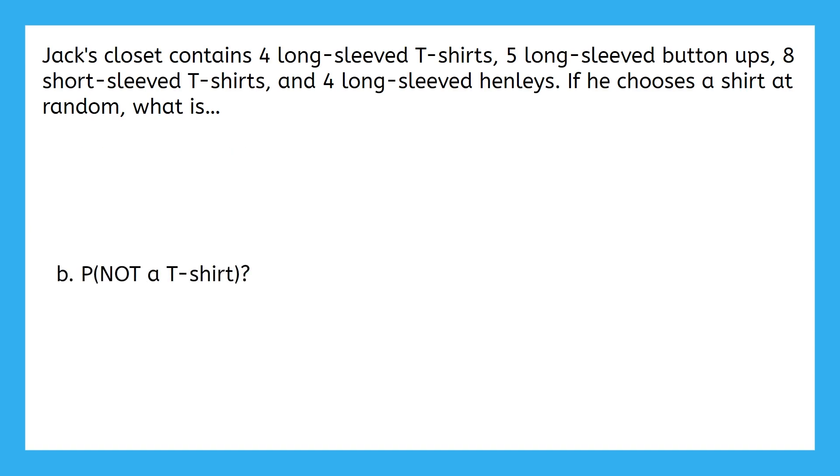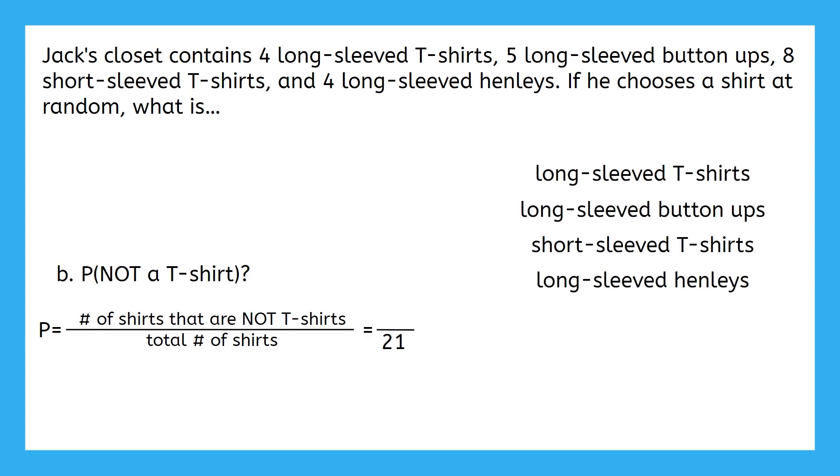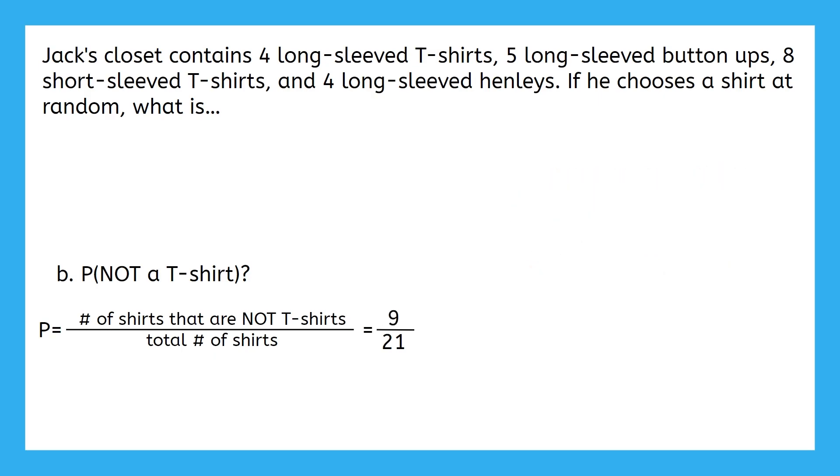Pause the video now and try part B out on your own. The total number of outcomes, or shirts, has not changed. So the denominator is still 21. The big question here is, how many of our outcomes meet the criteria of not being a t-shirt? Jack has four kinds of shirts. I only want to count the button-ups and the Henleys, because they're not t-shirts. The other two kinds of shirts are t-shirts. So between the five button-ups and the four Henleys, there are nine total shirts that are not t-shirts. This gives us a probability of 9 over 21. And we can simplify this to 3 over 7, and that would be our final answer.